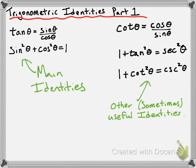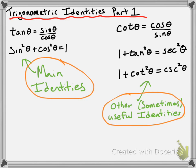These are sometimes useful if you remember them, but they're not mandatory because we can do everything with the main two identities and the reciprocal identities. The main two identities are very, very important. The other useful identities are going to be useful sometimes but they're not necessary. So let's take a look at an example.